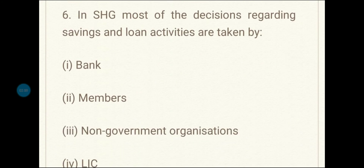Sixth question: in SHG, most of the decisions regarding savings and loan activities are taken by — options are: bank, members, non-government organizations, and LIC. The correct answer is the second option, that is, members.